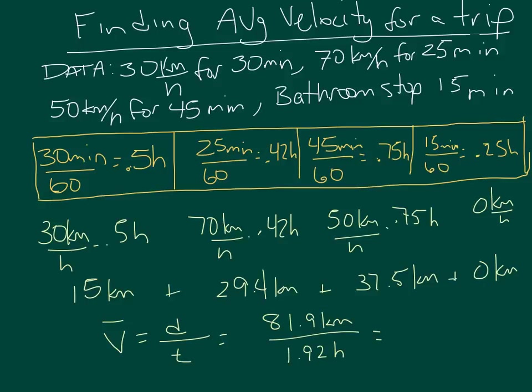Which would give me 42.7 rounded off kilometers per hour. That's the average for the entire trip. That takes care of the time that you've sat still plus all the driving time. Hopefully this helps you.